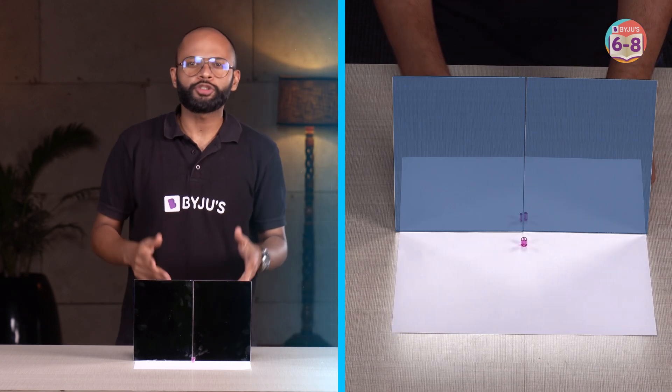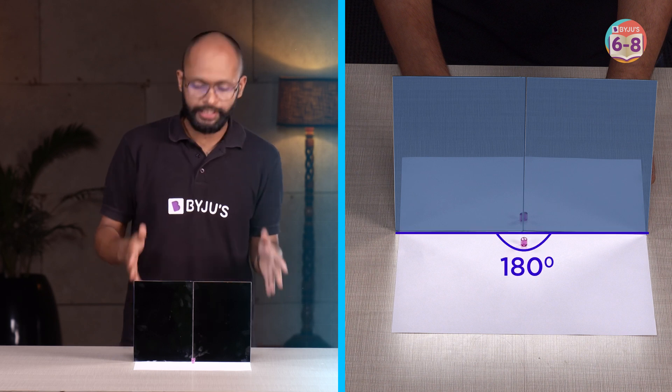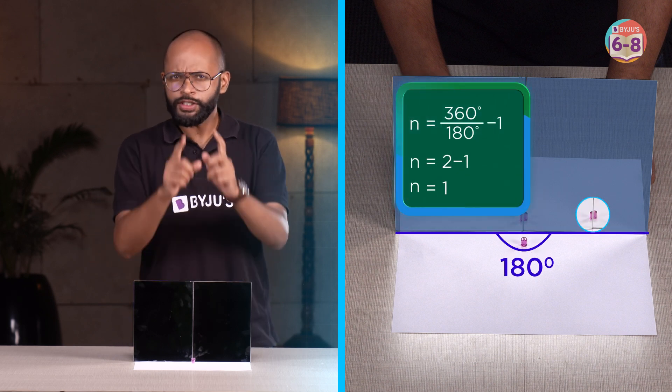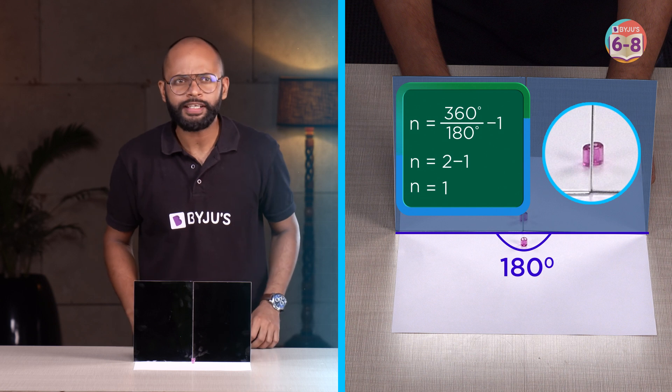Imagine two mirrors are standing next to each other, the angle would be 180 degrees, like this. The formula says you will get one image, which is exactly what you see right now.